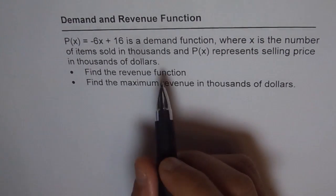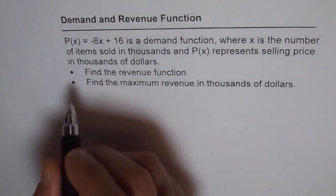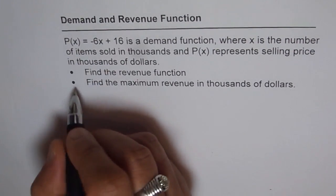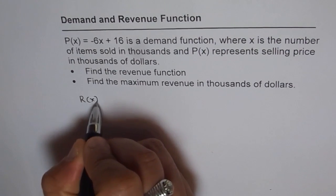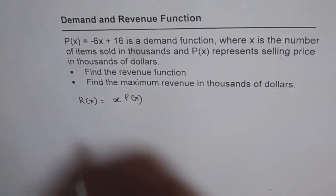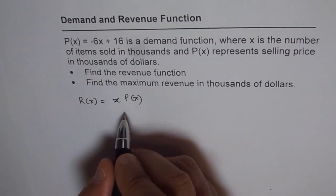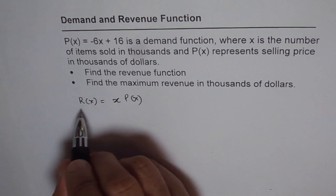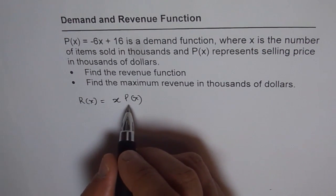The relation between demand and revenue is that the revenue function equals x times the demand function. That is the relation between revenue and demand function.